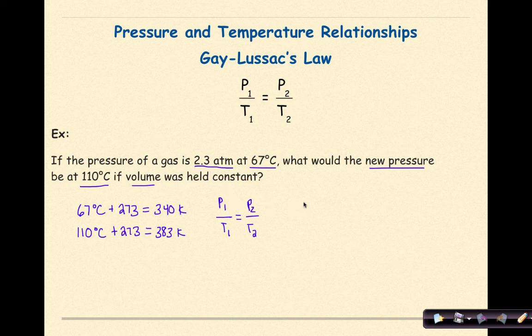2.3 atmospheres at 67 degrees Celsius. We now know that is going to be represented by 340 Kelvin. What would the new pressure be at 110 degrees Celsius?